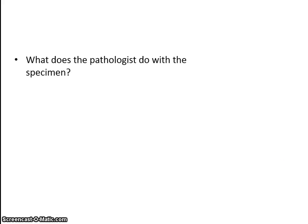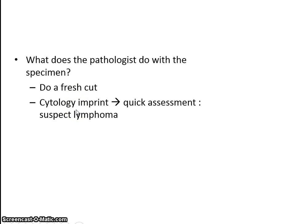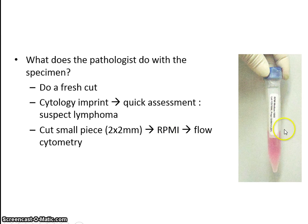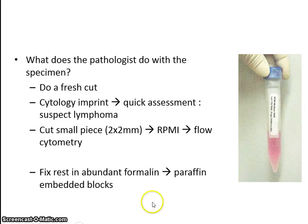So what does the pathologist actually do with the specimen? When we receive a fresh specimen, we will usually bisect it to have a fresh surface, then lightly touch it onto a glass slide so that the cells will be seen on the slide. We will stain it quickly with our cytology stains, completed in a few minutes, and assess to see if we think it's a lymphoma. If we suspect lymphoma, we will cut a small portion — only about 2 by 2 millimeters — fix it in RPMI, the pink solution, and send it to the hematology lab to perform flow cytometry to assess cell type and kappa-lambda light chain for B-cell clonality. The rest of the tissue is then fixed in abundant formalin and processed into paraffin-embedded blocks for H and E sections.